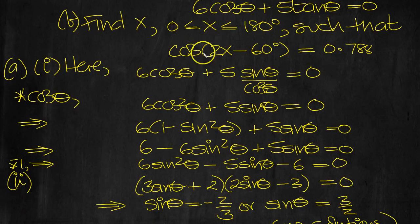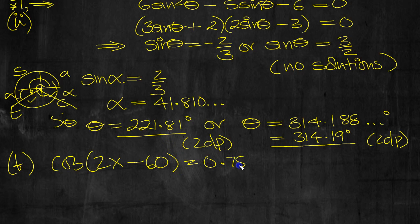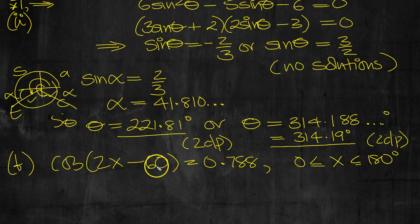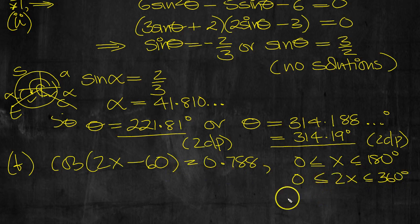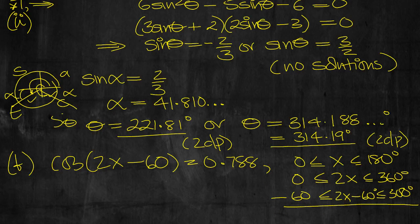So now we look at x for part B between 0 and 180 such that this holds cos 2x minus 60 is 0.788. So let's write that down then, cos 2x minus 60 is equal to 0.788. And we're looking for x between 0 and 180 degrees. We're really interested in this range of values, so let's double it then. So 2 of those, 2 of those, and 2 of these would give 360. And then take the 60 away all the way through. So there's our solution range we're interested in for this particular problem.